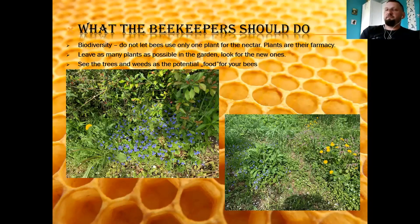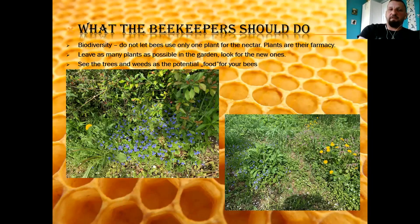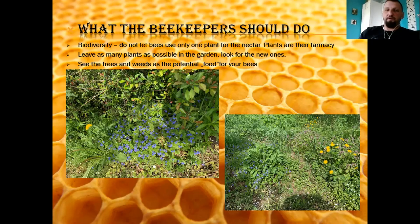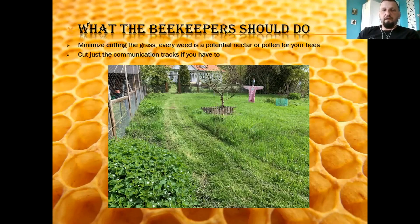First of all, biodiversity — that's very, very important. Do not let bees use only one plant for nectar. Plants are their pharmacy, and just like us, if you eat only the healthiest tomatoes but you eat them for half a year, of course you won't have enough nutrition because you need different kinds of food. It's the same for the bees — biodiversity is a key. So leave as many plants as possible in your garden, look for new plants which will be very good for your bees, and start seeing the weeds and the trees as potential food for your bees.